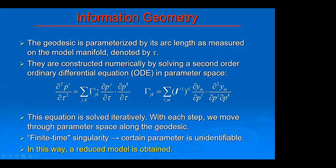We do it in iterative fashion. With each step, we move through the space of parameters. We can notice that some parameters will go either to zero or to infinity. When that happens, we say that's a singularity and we call that parameter unidentifiable. That's how we decide which parameters are important for the behavior of the system and which are not. This way, we obtain a reduced model.